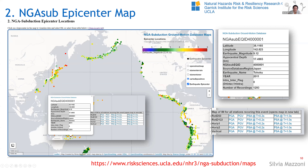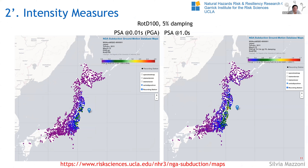I couldn't make up my mind as to which intensity measure to give you, so we pretty much gave you all of them — different components, the resultants including ROTD50 and ROTD100, PGA, PGV, and spectral acceleration at short and longer period ranges. If you click on one of these, it gives you an interactive map you can zoom in and out, seeing where the recordings are. You can click on each one and get metadata.